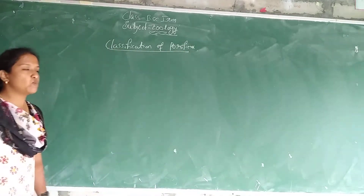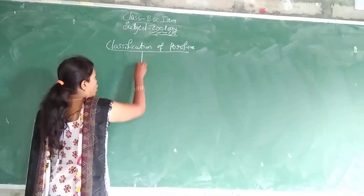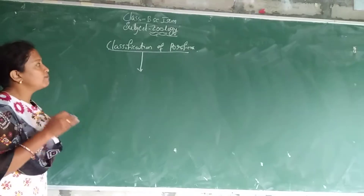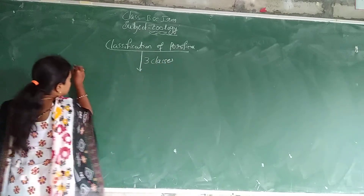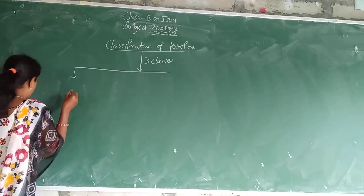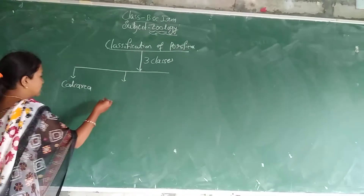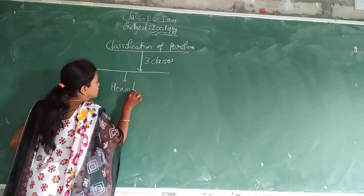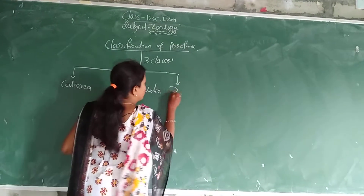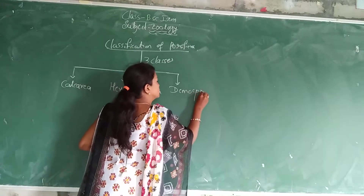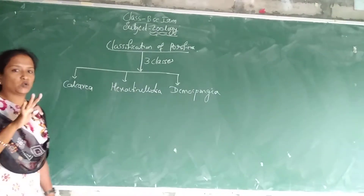Classification of Phylum Porifera. The Phylum Porifera is divided into three classes: one is Calcarea, second one is Hexactinellida, and third one is Demospongia.